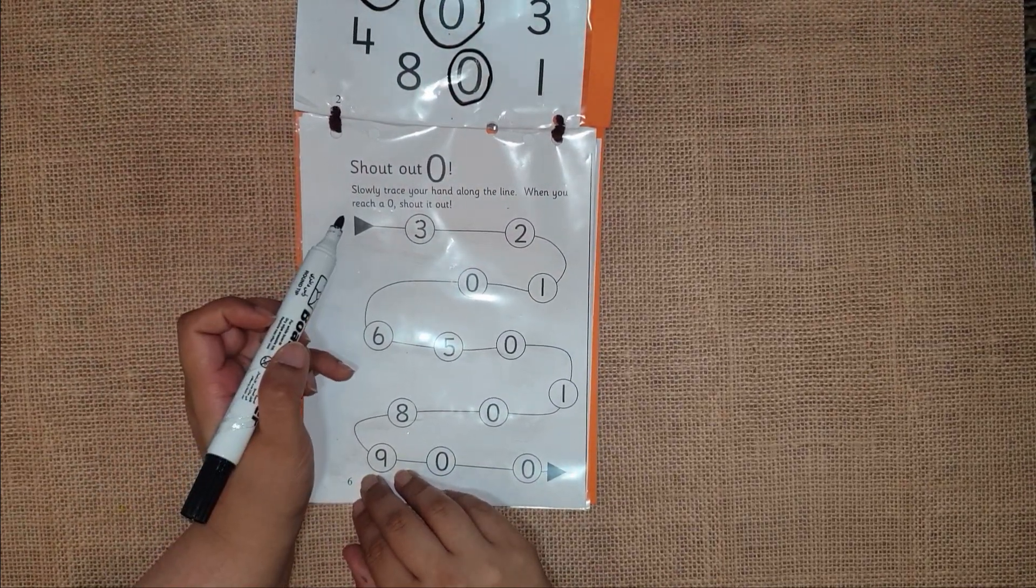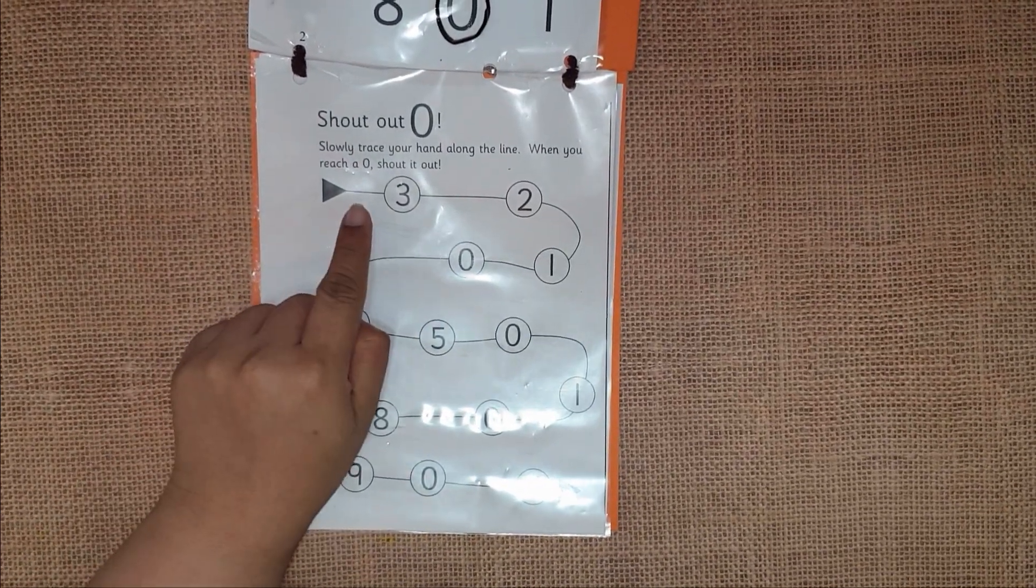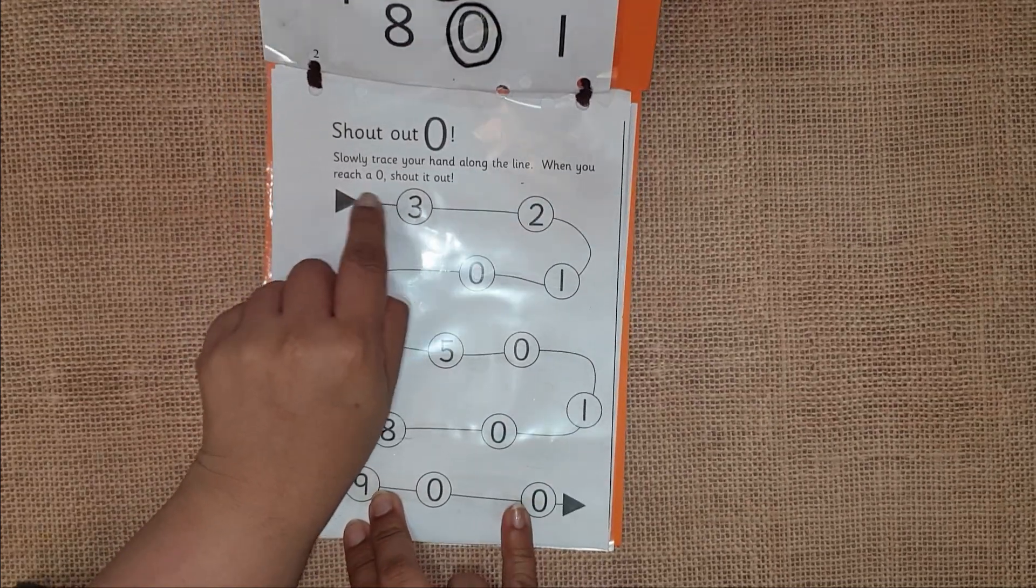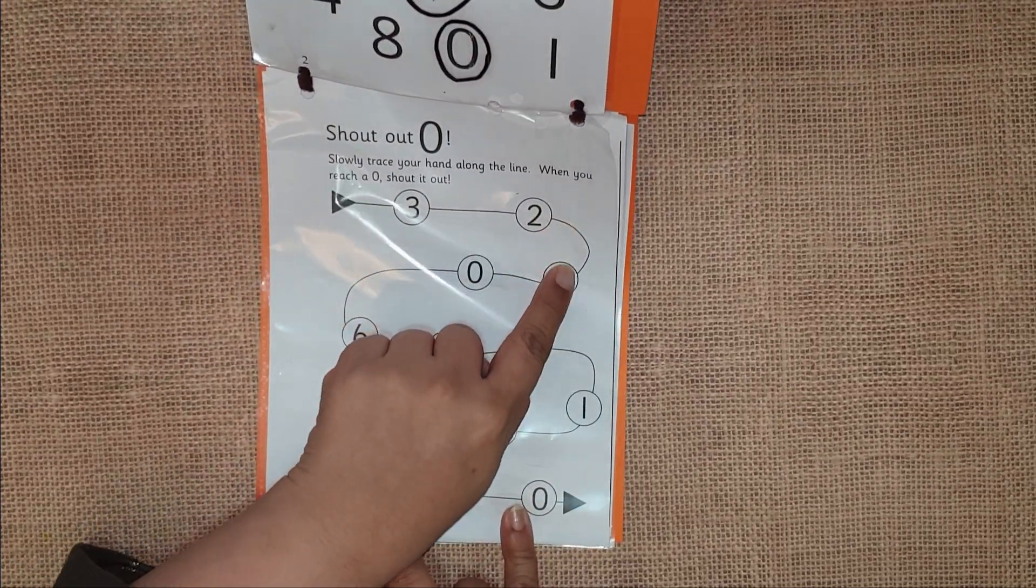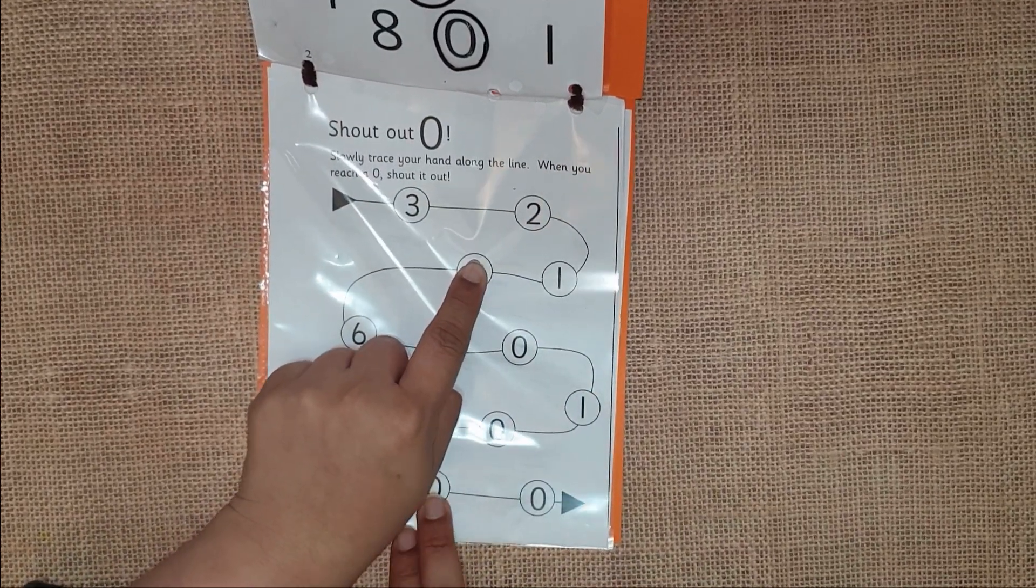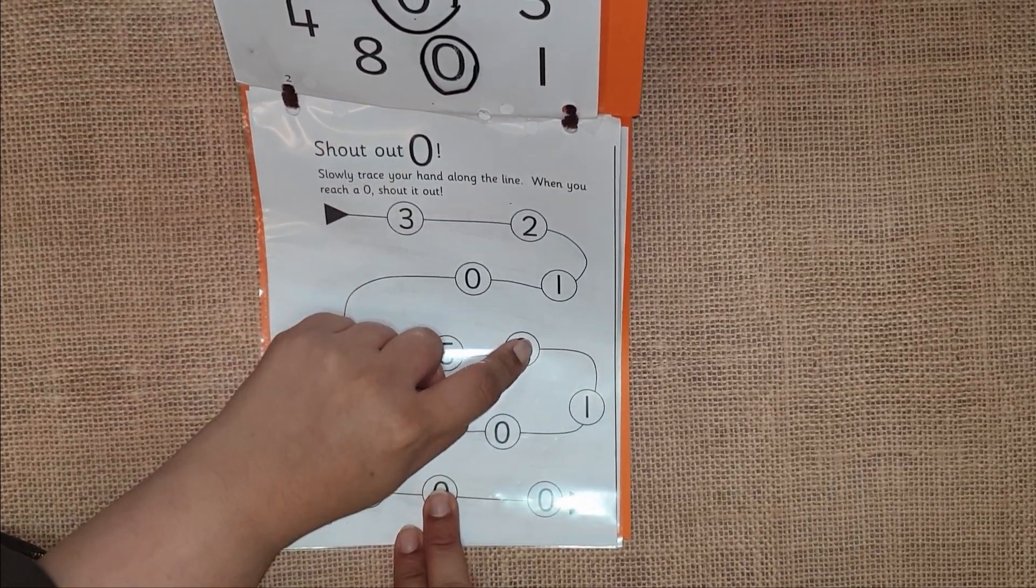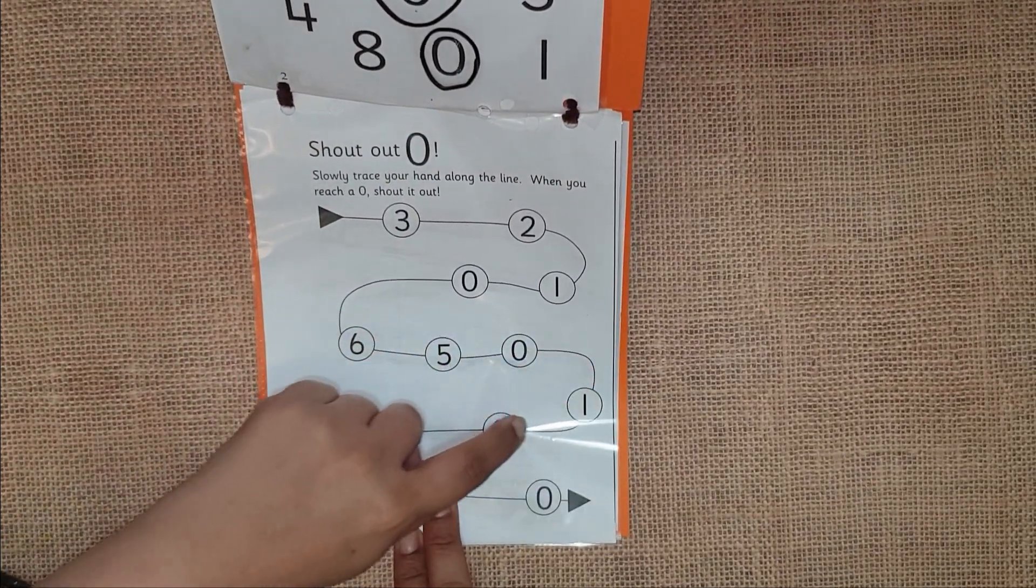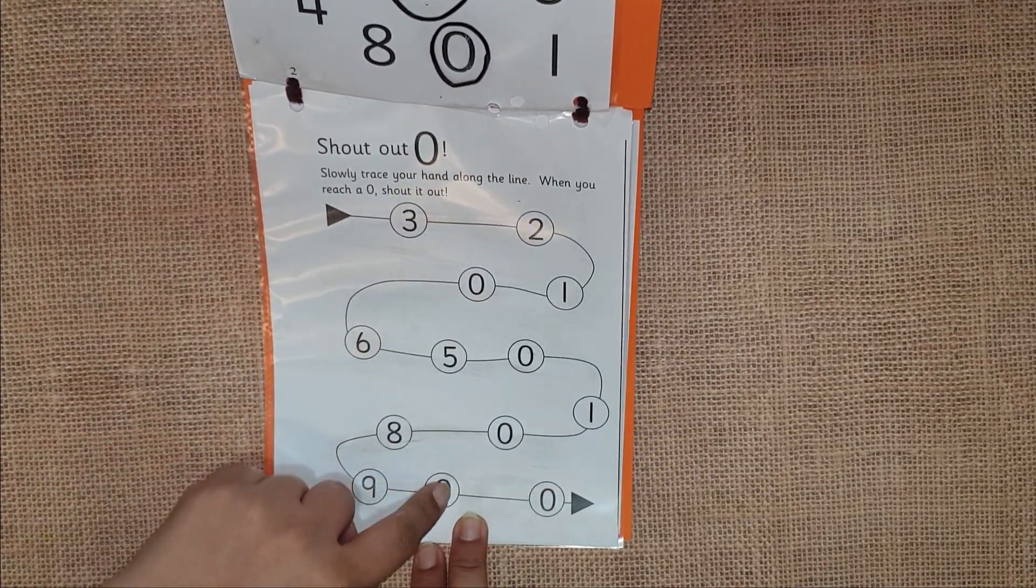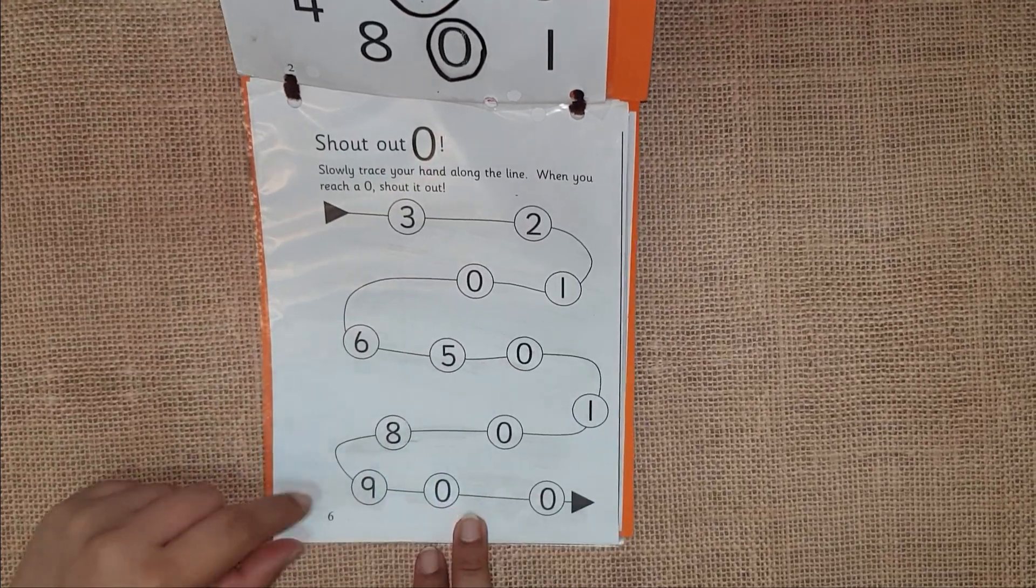Slowly trace your hand along the line. When you reach a zero, shout it out. Let's go. Zero. Zero. Zero. Zero. Yes, good job.